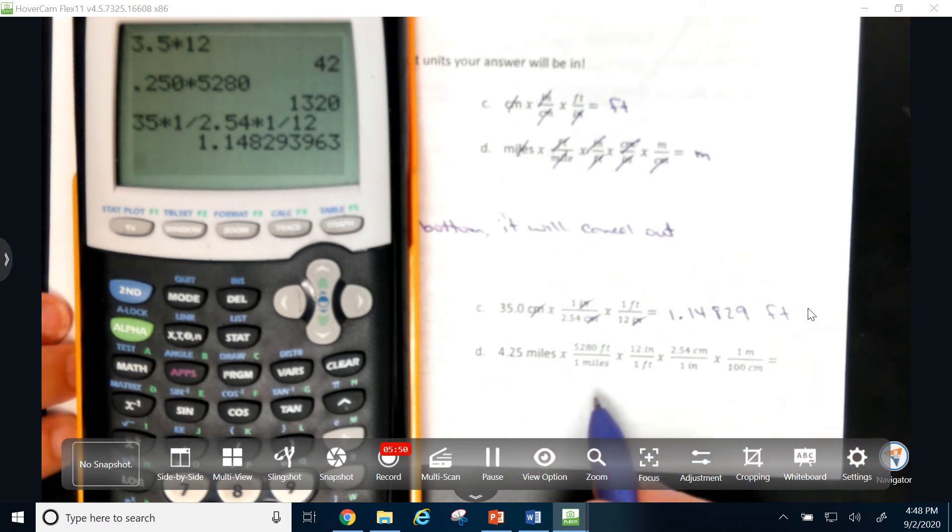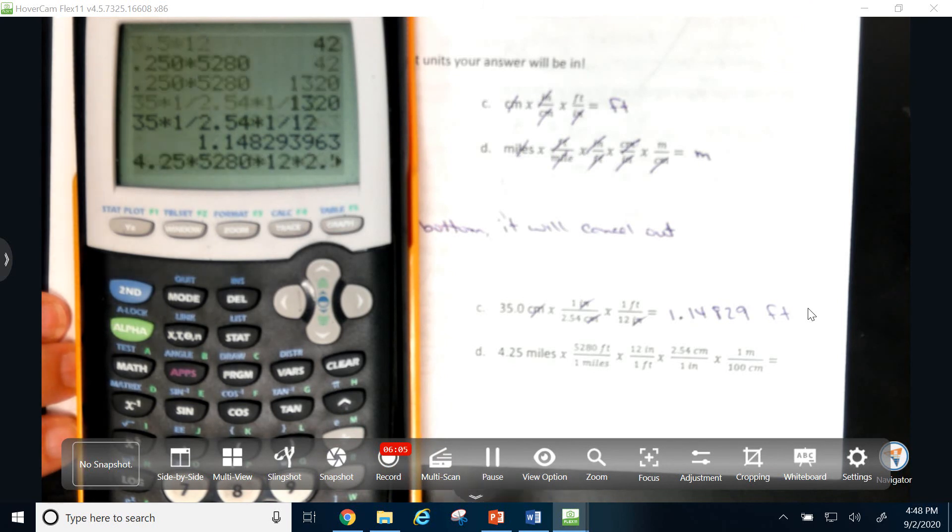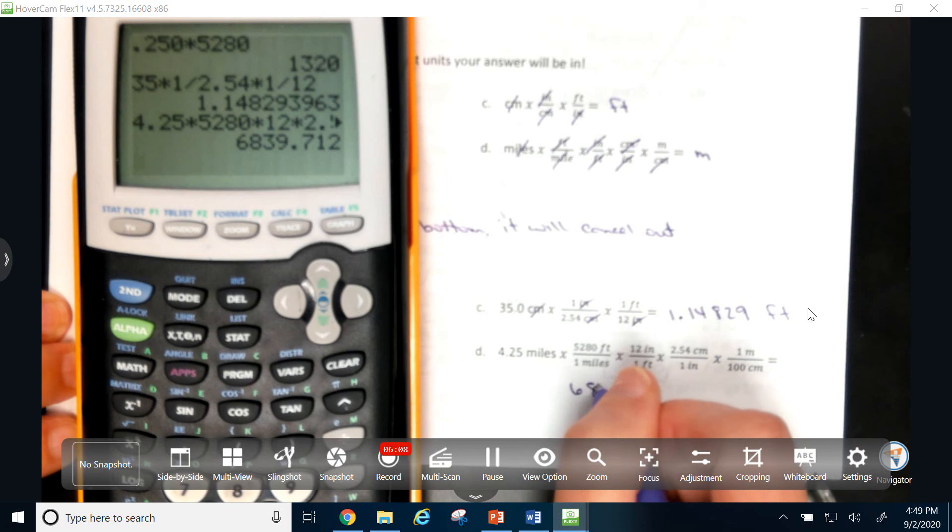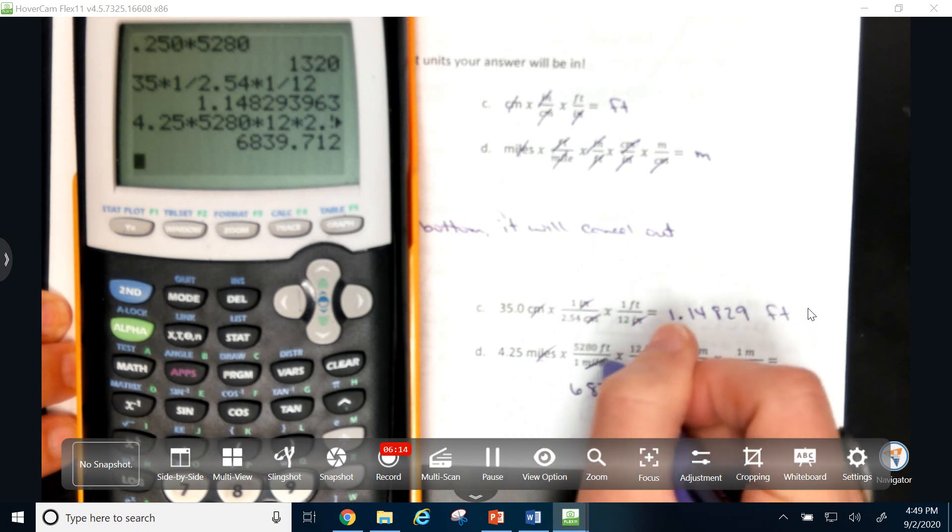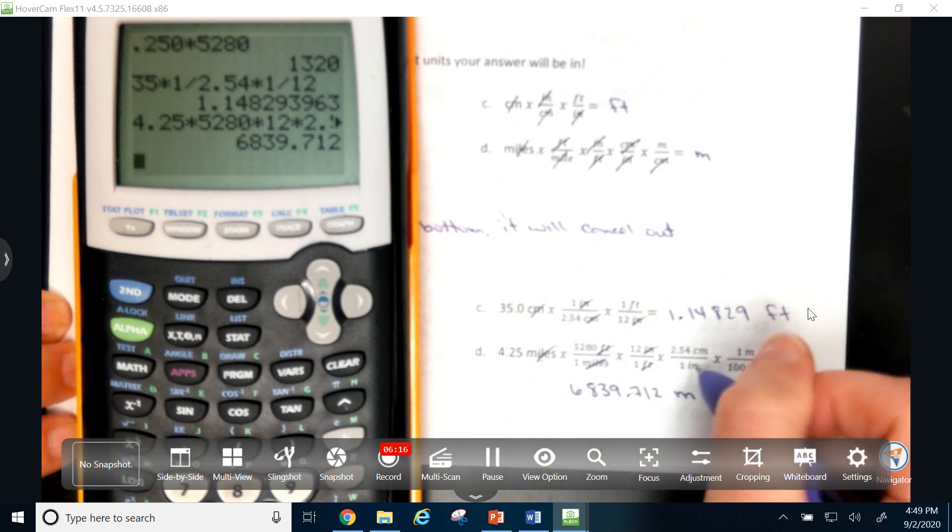And here, I have 4.25 times 52.80 because it's in the top, times 12 because it's in the top, times 2.54 because it's in the top, divided by 100 because it's in the bottom. And my answer would be 6,839. And my units would be meters, because my miles cancel, my feet cancel, my inches cancel, my centimeters cancel, and I'm left with meters.